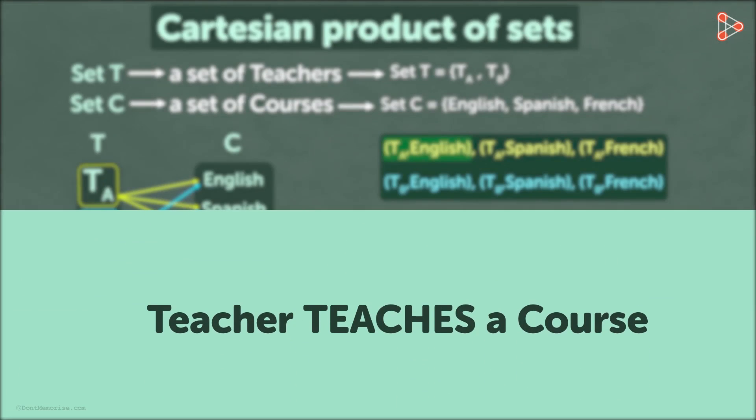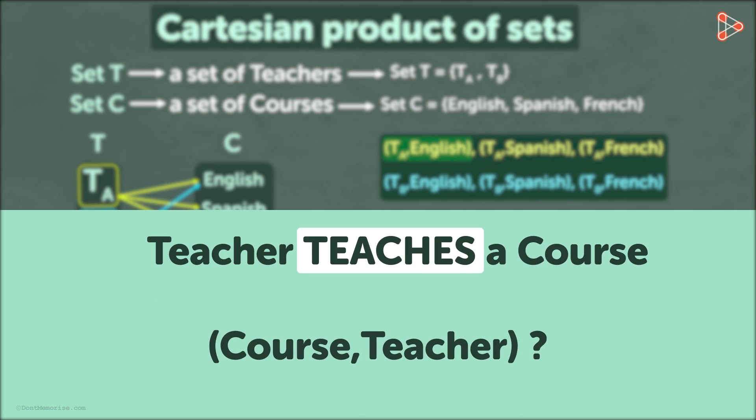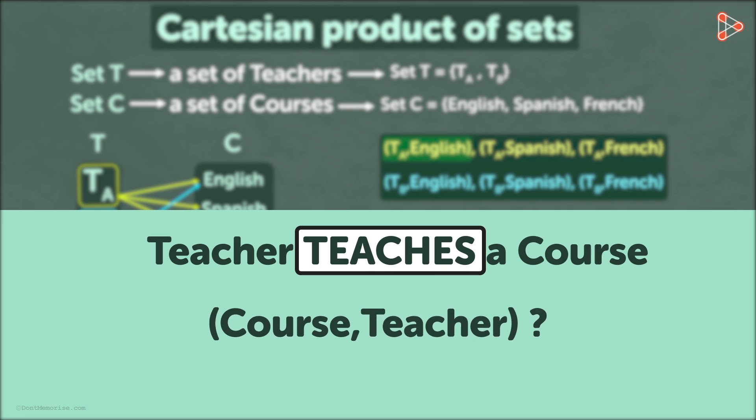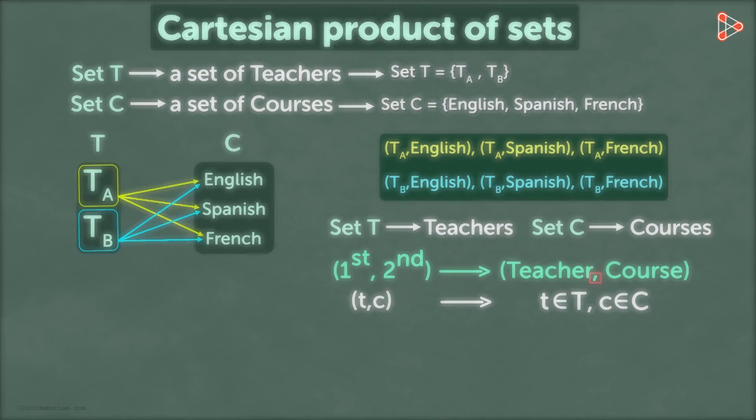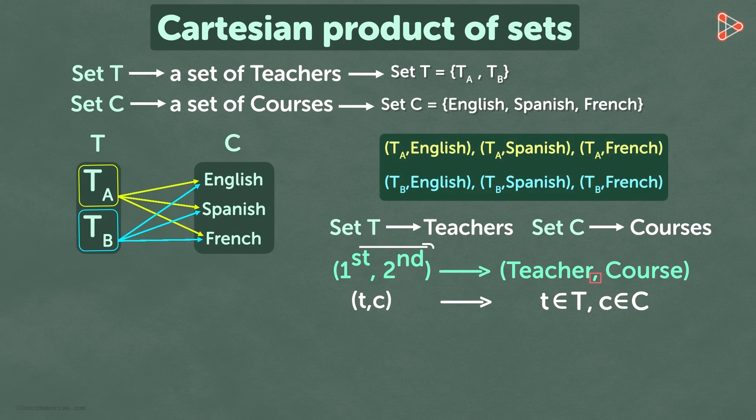Remember we are saying teacher teaches course. The relation here is teaches. What if we write the first entry as course and the second entry as teacher? Is that correct? Since the relation here is teaches, it would be incorrect to say that course teaches teacher. So we cannot write the first entry as course and the second entry as teacher. From this, we can conclude that the order of elements within the round brackets matters.